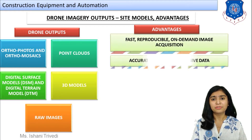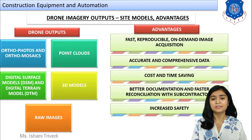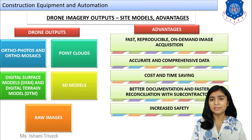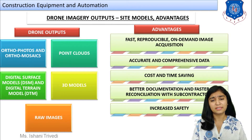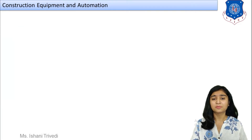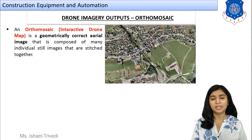Before discussing them in detail, let us also talk about the advantages of drone photogrammetry. We have fast, reproducible, on-demand image acquisition. Next, accurate and comprehensive data — we already have a detailed explanation for why we get this. Then cost and time saving, which is highlighted in every type of application. Better documentation and faster reconciliation with subcontractors, which we talked about in quantity surveys. And finally, increased safety of workers because you can reach inaccessible areas.